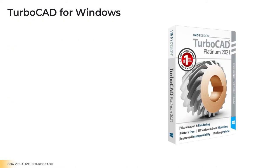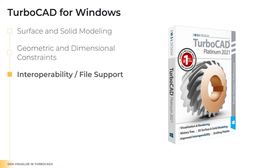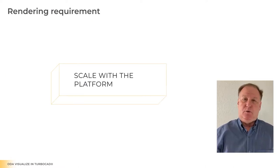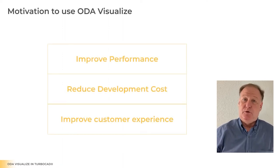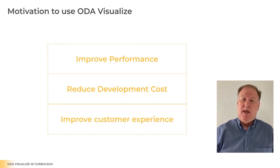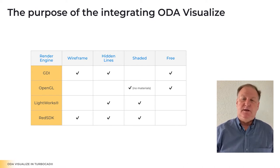Our TurboCAD for Windows product was the first to integrate Visualize. It features extensive 2D drafting, annotation, surface and solid modeling, geometric constraints, parametric design, and a broad suite of interoperability solutions. TurboCAD is used across platforms ranging from integrated GPUs to high-end NVIDIA GeForce boards, so our rendering implementation needs to scale with the platform. TurboCAD previously supported four graphics engines: GDI, OpenGL, Lightworks, and Red SDK, all wrapped under one render manager layer.